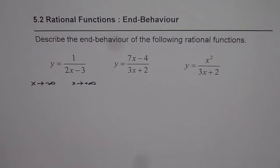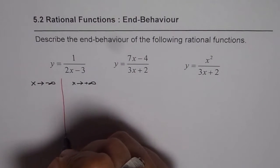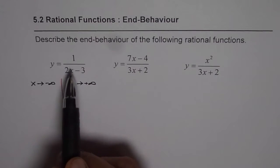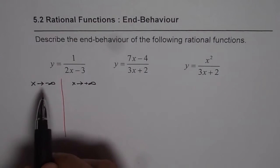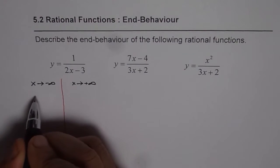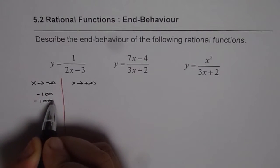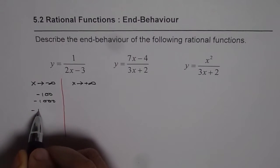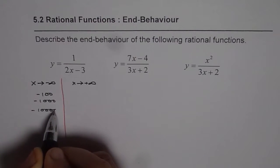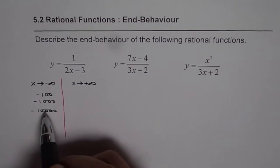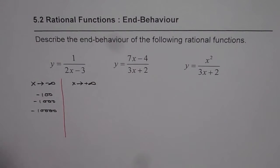What we can do is substitute large values and use a calculator to calculate what really happens. For example, let's take the first function: y equals 1 over (2x minus 3). A negative large value is like negative 100, negative 1,000, or even negative 10,000. We can substitute x with these values and see what happens to the y value. Let's calculate.